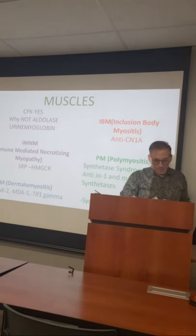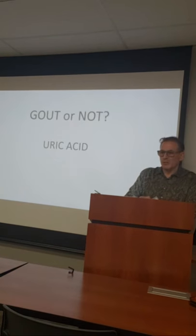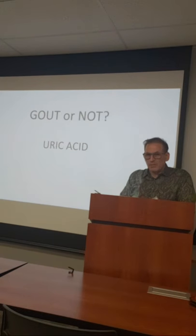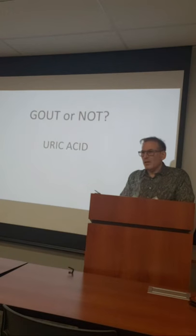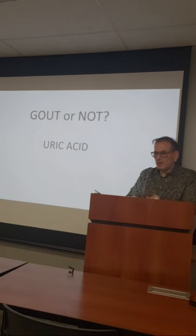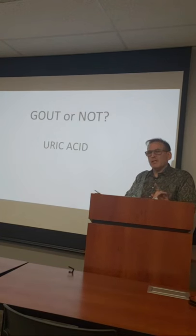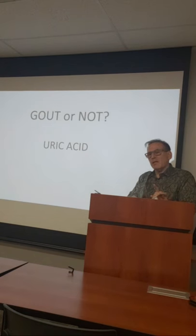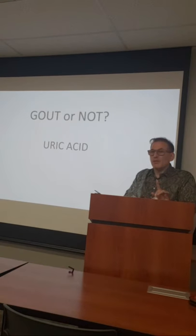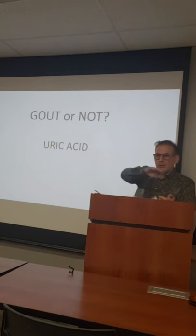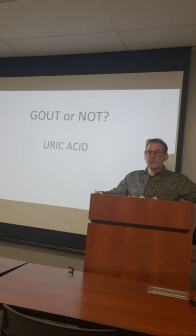Uric acid as pertains to gout: has anyone diagnosed gout based on uric acid level? If yes, you're wrong. The only way to diagnose gout is by analyzing synovial fluid under a polarizing microscope — or dark field if you're savvy — and finding monosodium urate crystals. Uric acid is your barometer for treatment. The textbook and boards say uric acid must be 6 mg/dL or less; Steve Soloway says 5 or less; the guidelines say for tophaceous gout it should be 5 or less.